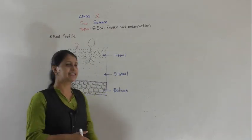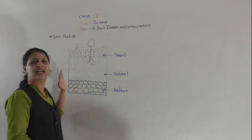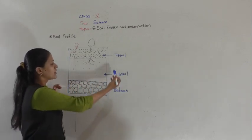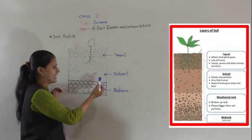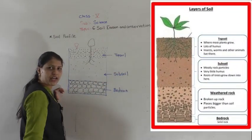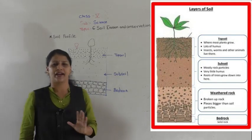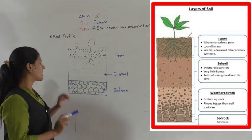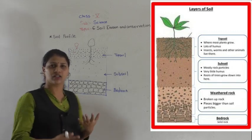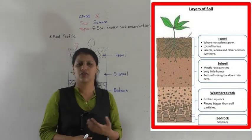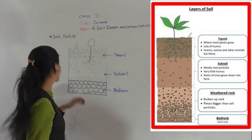Soil exactly consists of three layers. The first layer is topsoil, below that is subsoil, and the last is bedrock. Now we are going to discuss what the constituents of each layer are.